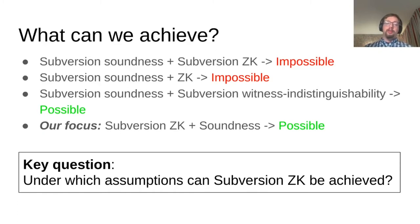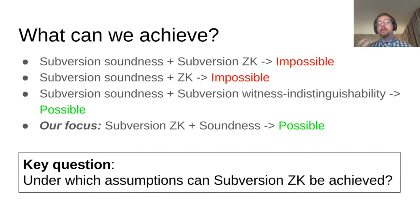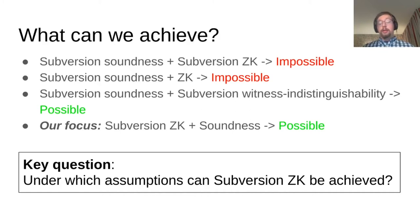Our focus will be on subversion zero knowledge and soundness. So if the CRS is maliciously generated, even in this case the zero knowledge property should remain. The soundness property will hold if the CRS was honestly generated, but will fail — or might fail — if the CRS is maliciously generated. The key question of our paper is: under which assumptions can subversion zero knowledge be achieved? That is the fundamental question we tried to answer.